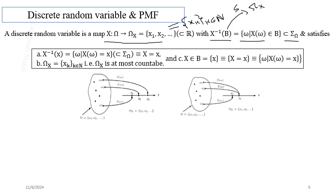This is the definition of a discrete random variable. A small x is one instance or one observation of the random variable X. The inverse image of small x is the collection of all omega from sample space capital omega which are mapped to small x — that is, the set of omega such that X of omega equals small x. We can denote this loosely as the event X equals small x. The second condition is that omega X, the range of X, must be a discrete set — either a finite or infinite sequence.